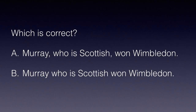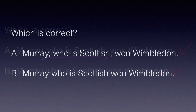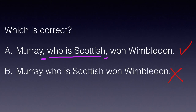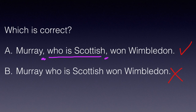This slide is a few years old, but never mind. Which is correct, A or B? In A we have 'Murray, who is Scottish, won Wimbledon.' In B we have 'Murray who is Scottish won Wimbledon.' That's right, it's A — 'Murray, comma, who is Scottish, comma, won Wimbledon.' 'Who is Scottish' is extra information. We don't need it to understand what we mean by Murray. So this is a non-defining relative clause — it does not define the head, which is Murray. The basic sentence in A is 'Murray won Wimbledon.'